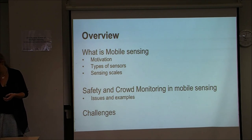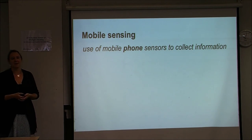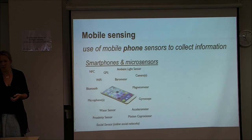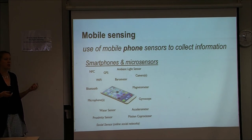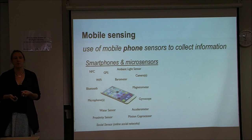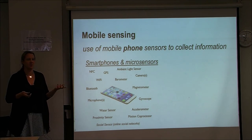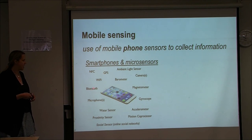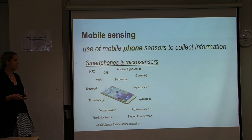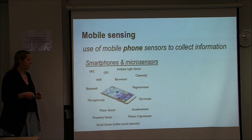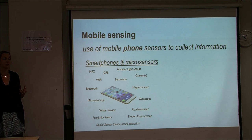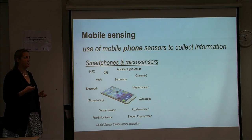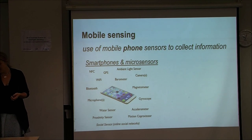Mobile sensing is simply the use of mobile sensors to collect information. Smartphones today are equipped with a variety of micro sensors, and every year we get more. Five years ago your phone was very different from today. We have GPS, Bluetooth, accelerometers, barometers, and more — sensors originally used for specific applications that people quickly realized could be used for much more.